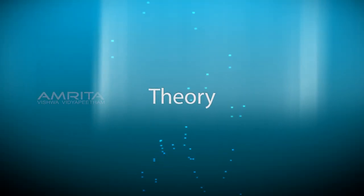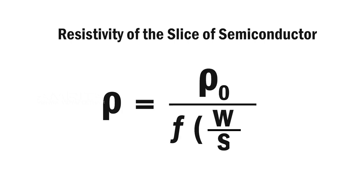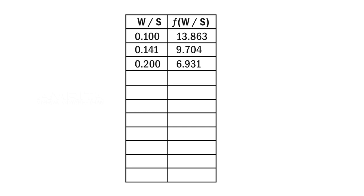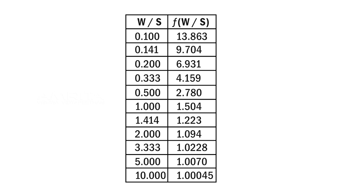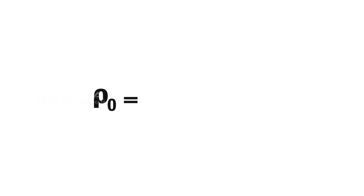Theory: Resistivity of the slice of semiconductor having thickness w is computed as ρ = ρ₀ / f(w/s). By knowing w/s, function of w/s can be found from the reported table. Where ρ₀ = V/I × 2πs.